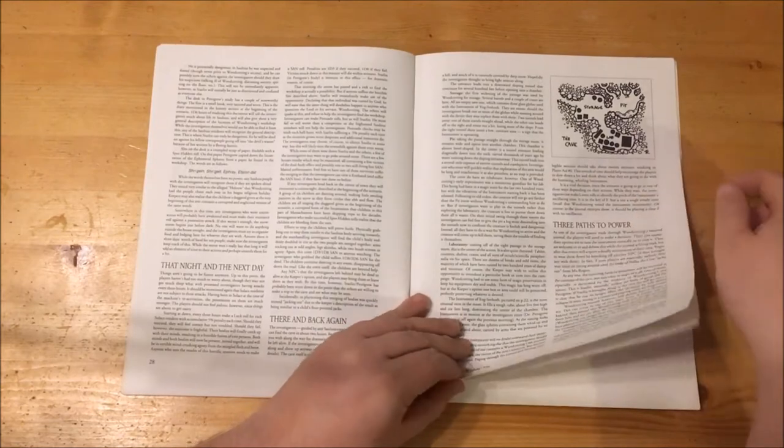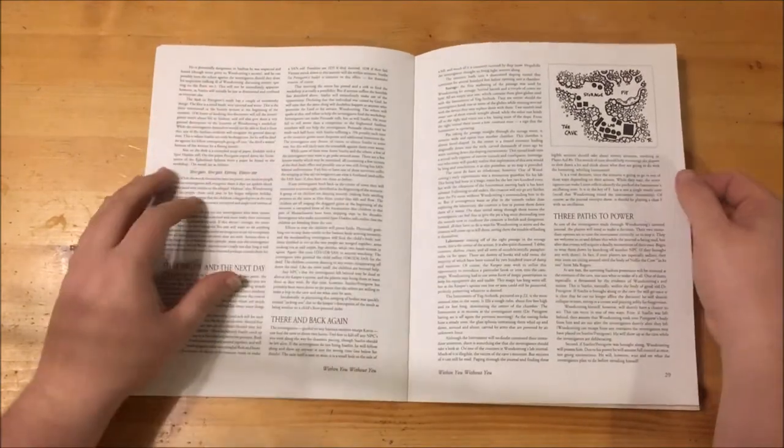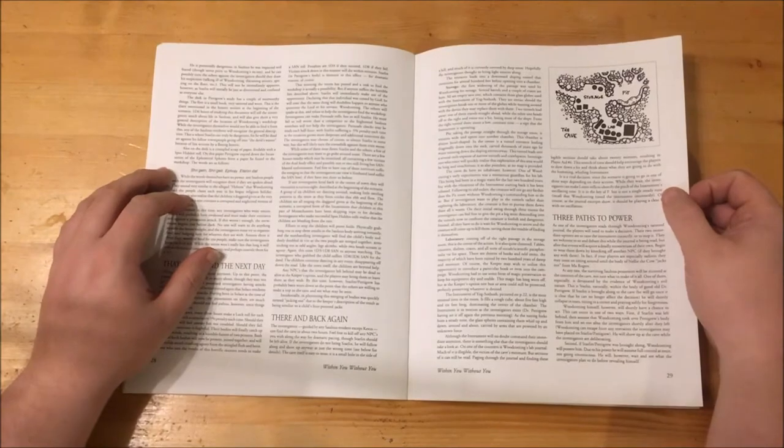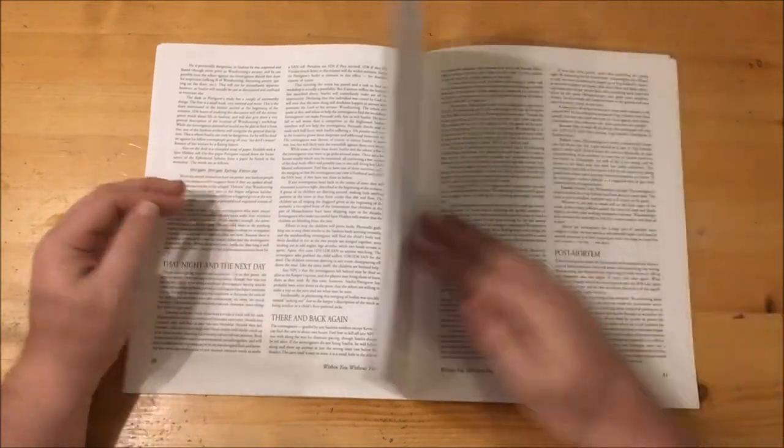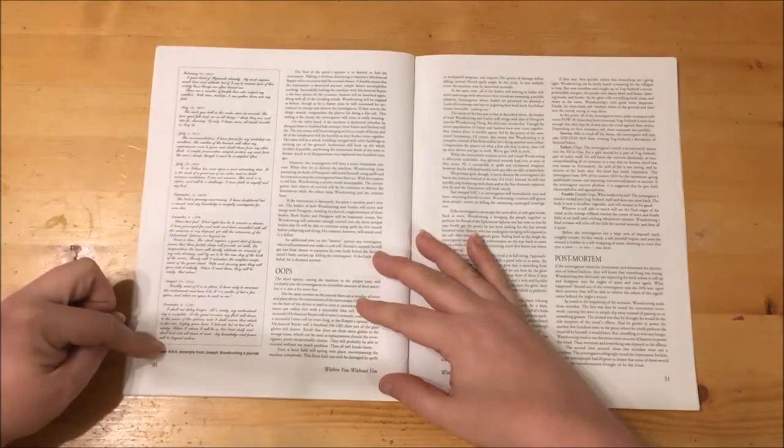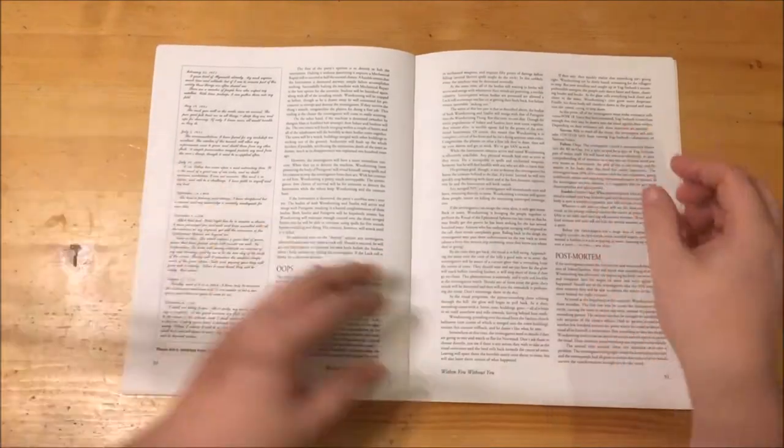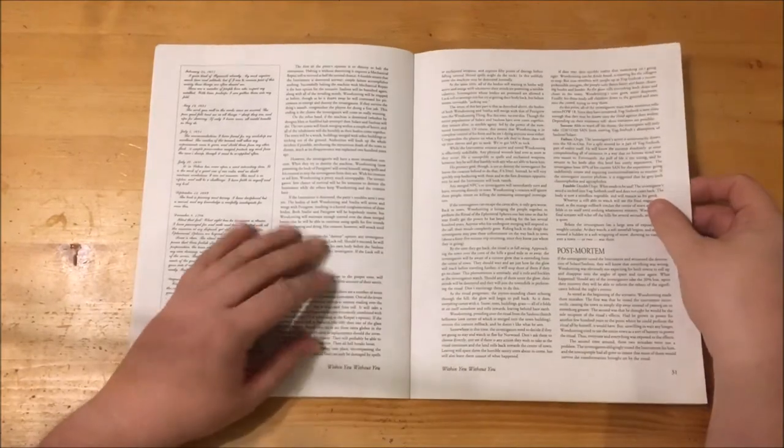They arrive to find a cave entrance at the base of a hill covered in deep snow. If they explore the cave, they find a storage area and a pit which contains a monstrous guardian, created by Woodcotting, which they really should avoid. Eventually, they will come upon the laboratory. The instrument of Yog-Sothoth, pictured earlier, is here. The tuning forks hum and the glass spheres whirl powered by unknown forces. If the players take the time to explore a bit, they will come across Woodcotting's journal, mostly illegible due to the moisture in the cave.